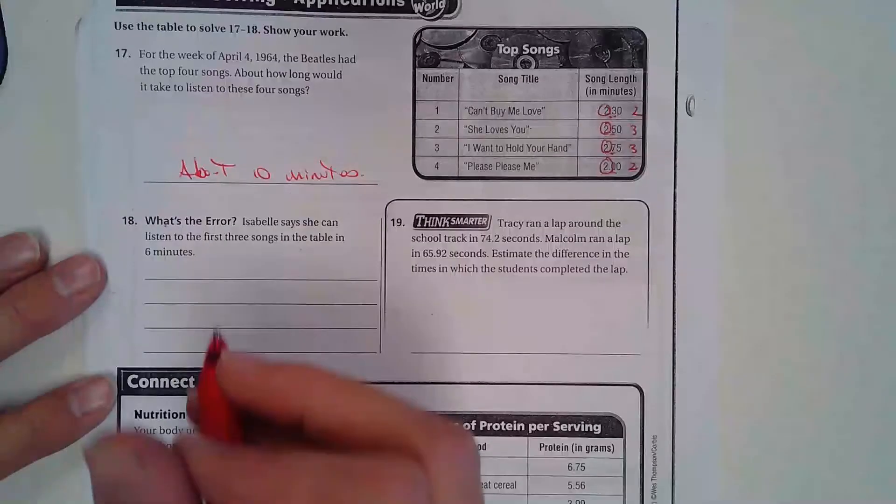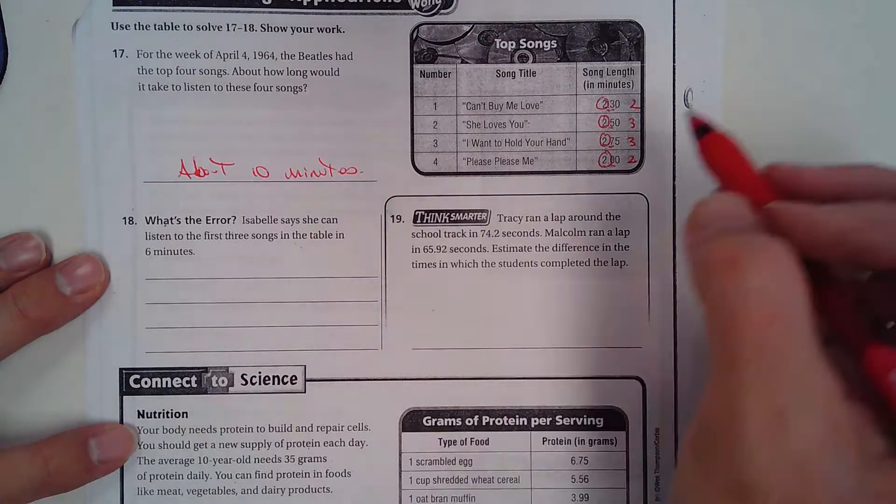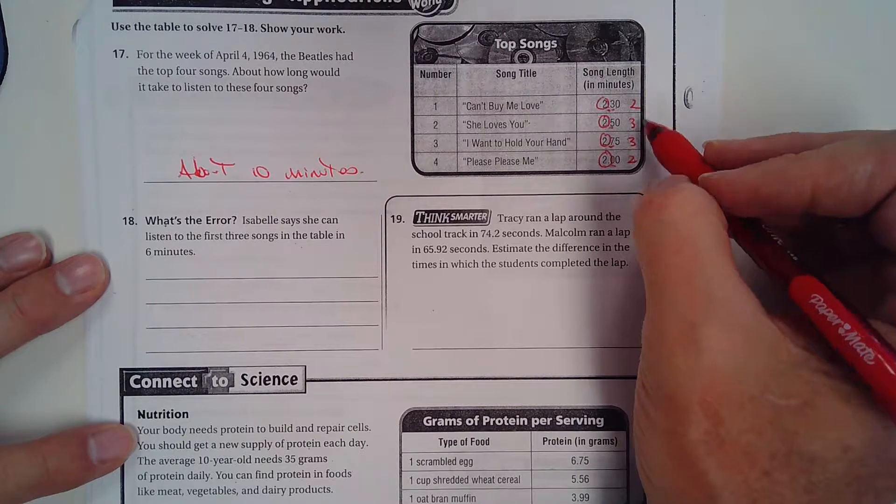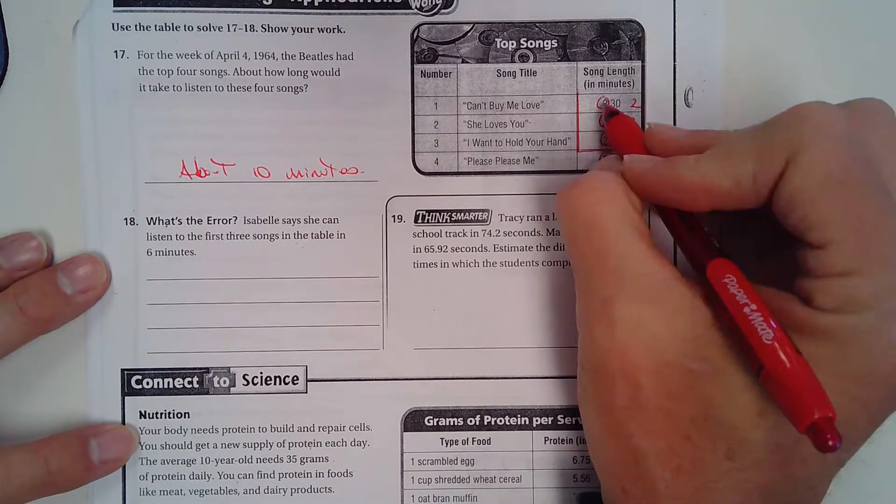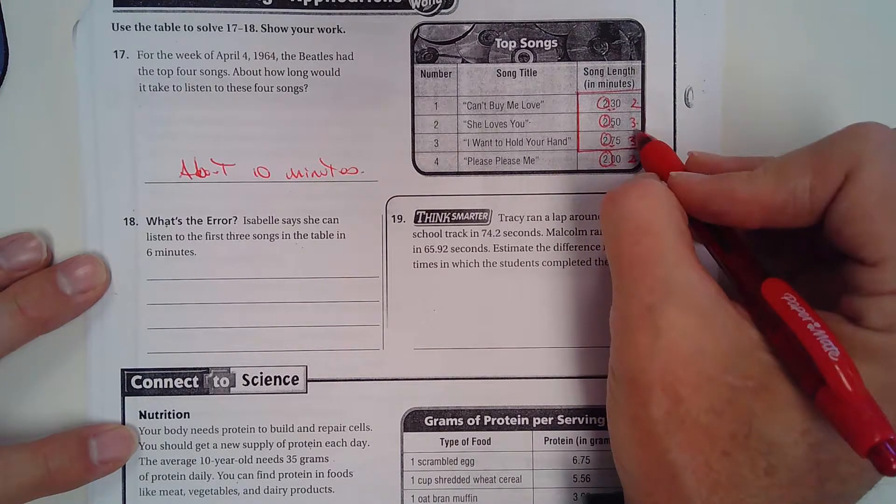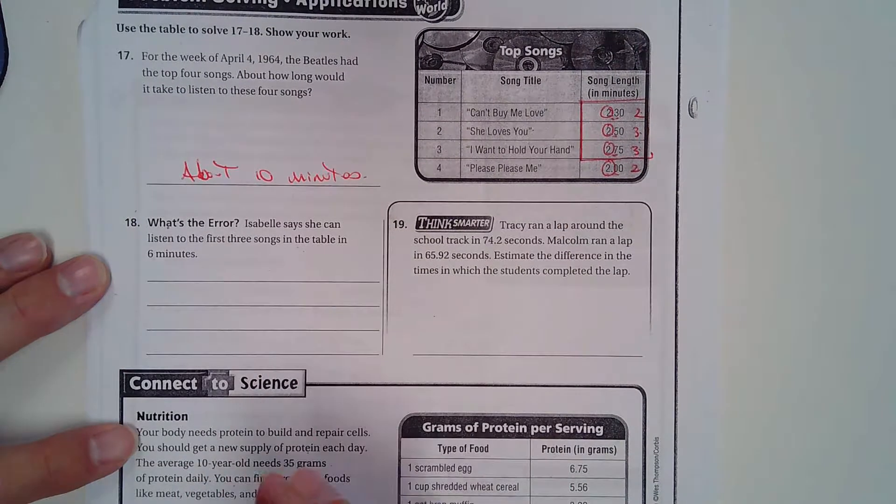Okay, what's the error? Isabel says she can listen to the first three songs in the table in six minutes. Well she's wrong. Why wrong? I'm not gonna write it out. You tell me right here. First three songs - she says six minutes. Well, I'll let you phrase that however you want.